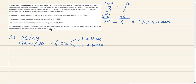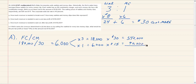To find break-even revenue, we take 18,000 wallets times $30, which gives us $540,000, and 6,000 money clips times $15, which gives us $90,000. Adding those together, our break-even revenue is $630,000, representing 18,000 wallets and 6,000 money clips. That's how we do part A.